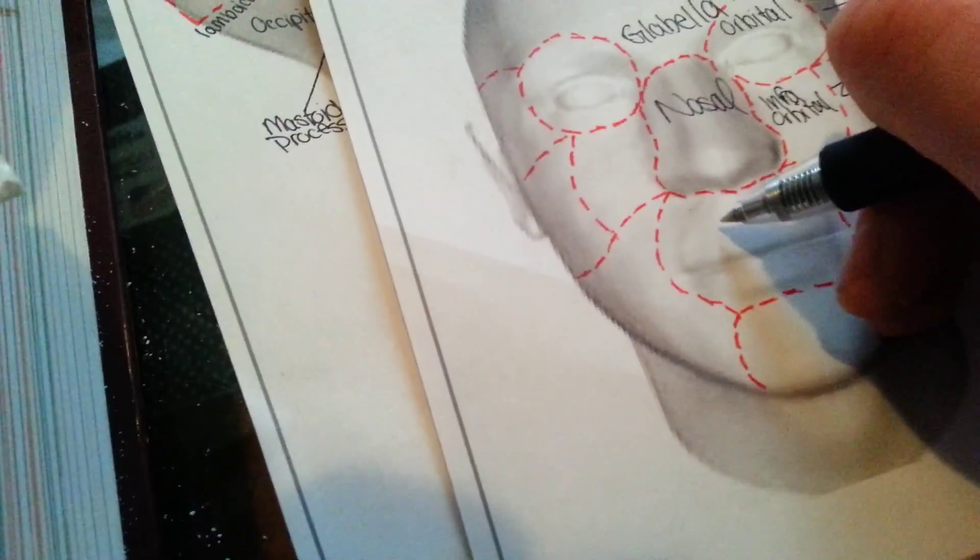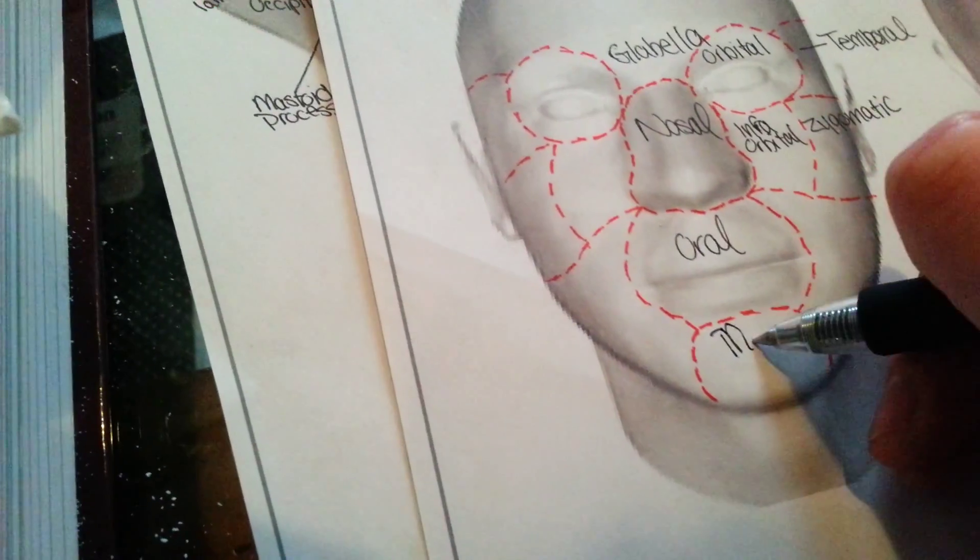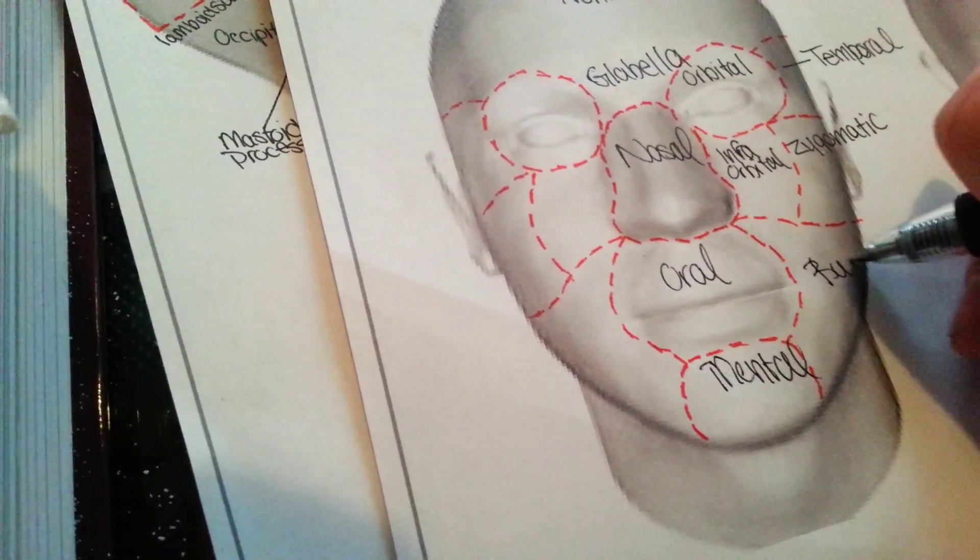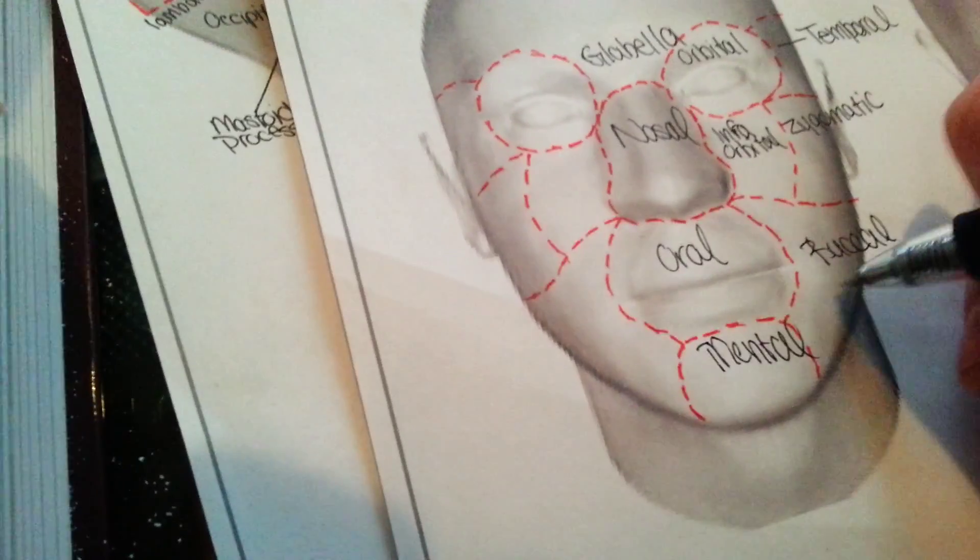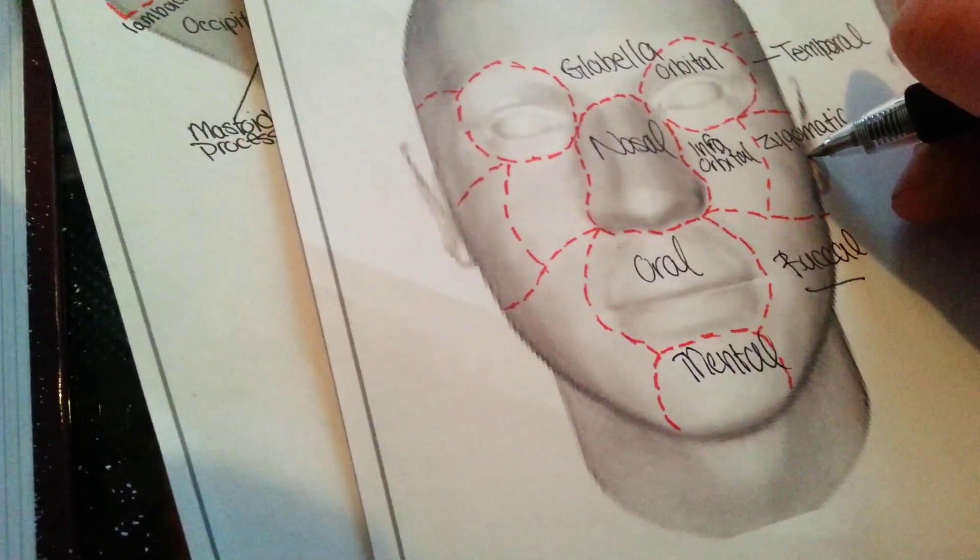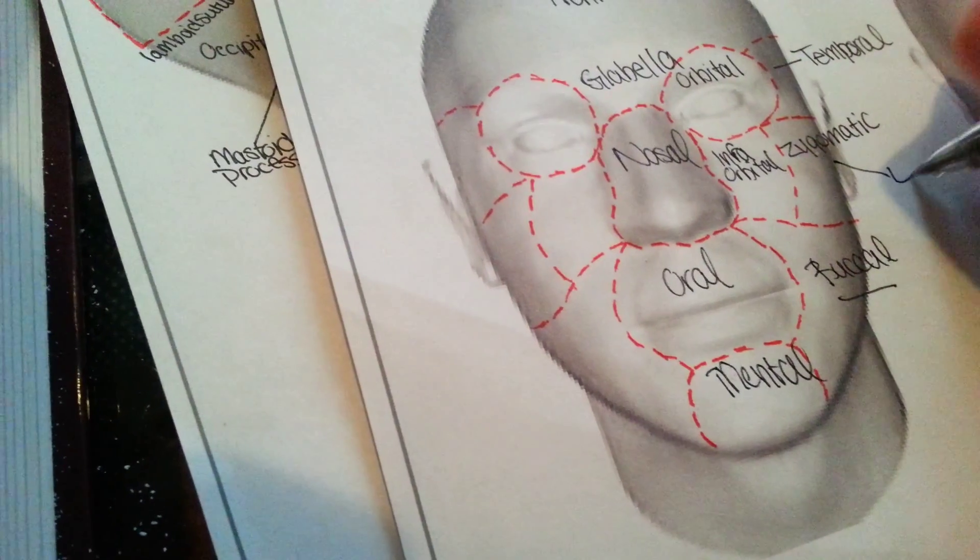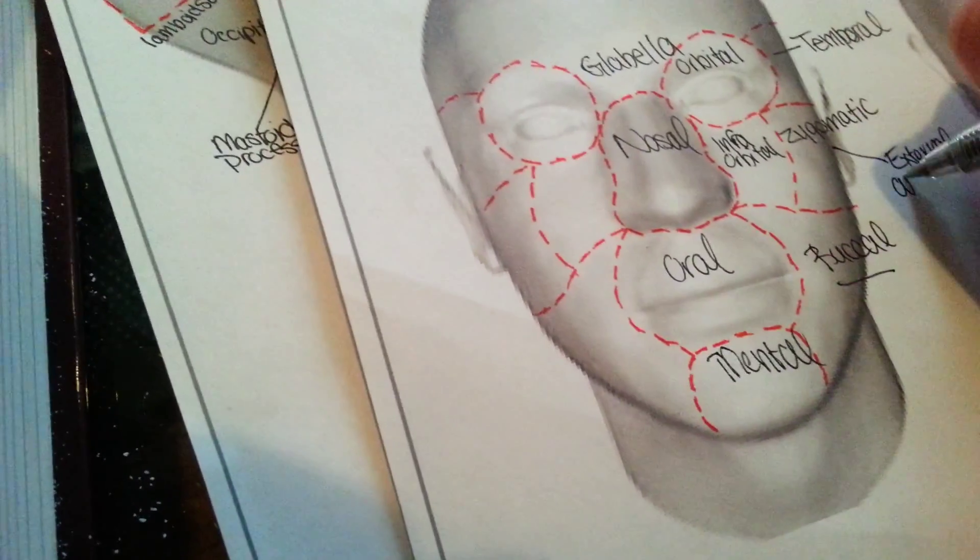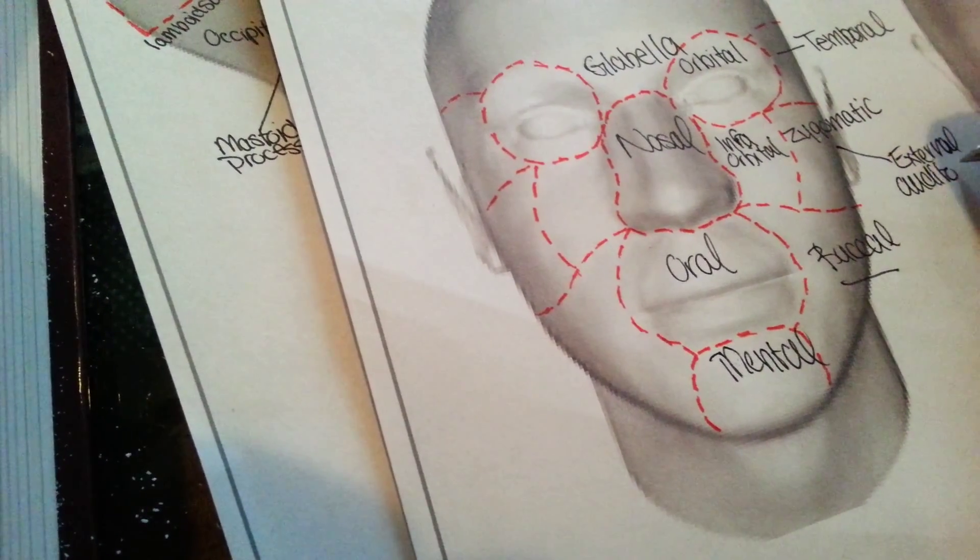Nasal region. Oral region. Mental region. Buccal. Cheeks. Again. External auditory meatus.